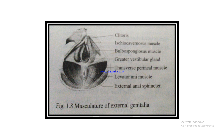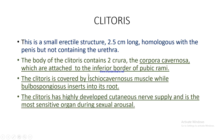The musculature of the external genitalia can be seen in this diagram, showing the clitoris and ischiocavernosus muscle, the bulbospongiosus muscle, the greater vestibular glands, the transverse perineal muscles, levator ani muscle, and the external anal sphincter.